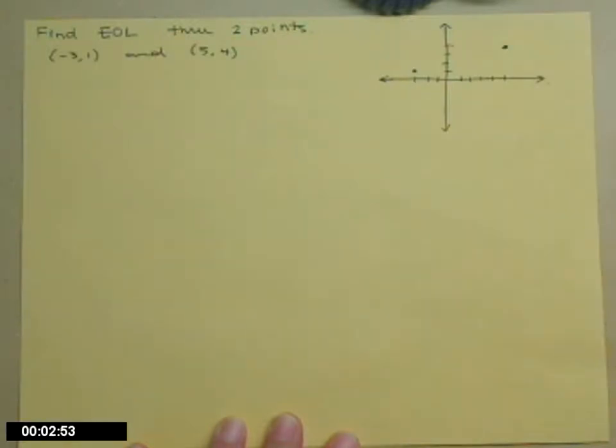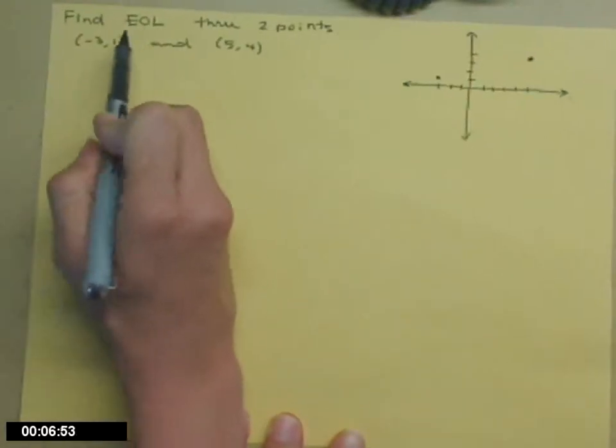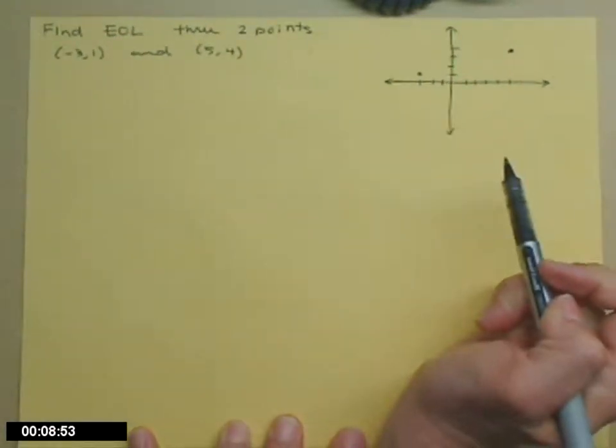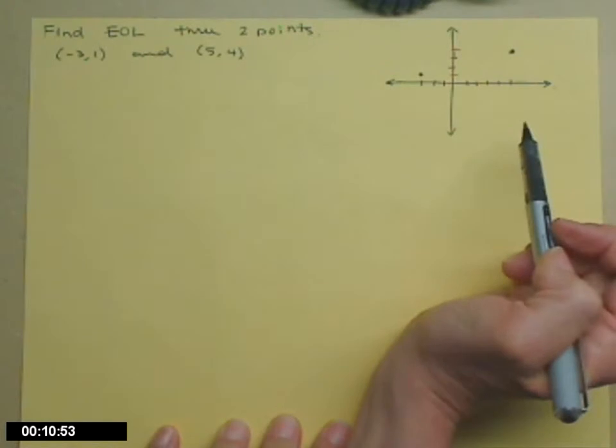Let's look at how we find the equation of the line if we're given two points. Here's some of my abbreviations: EOL for equation of line, and through is always THRU for me.